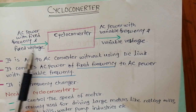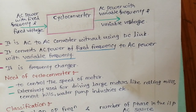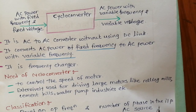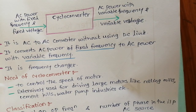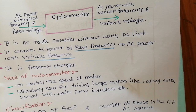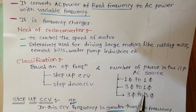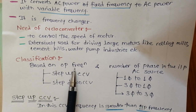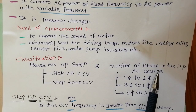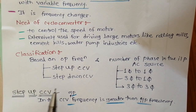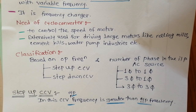Based on output frequency and number of phases in the input AC source, cycloconverters are broadly classified into two types. Based on output frequency: step-up cycloconverter and step-down cycloconverter. Based on the number of phases in the input AC source: single-phase to single-phase, three-phase to single-phase, and three-phase to three-phase cycloconverters.